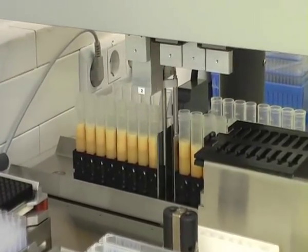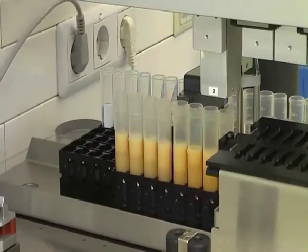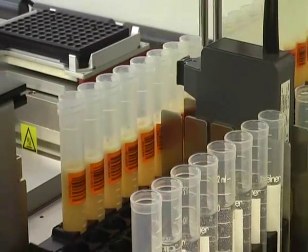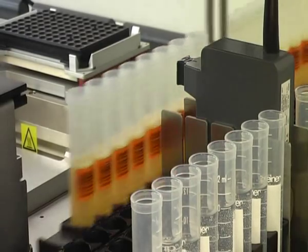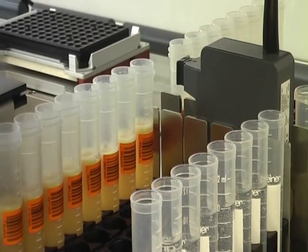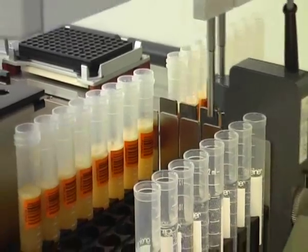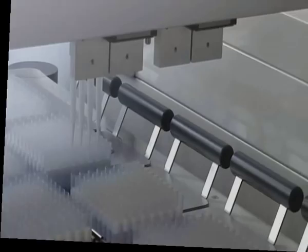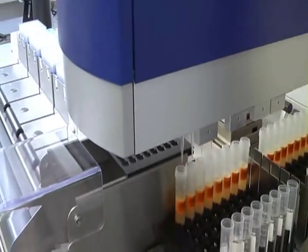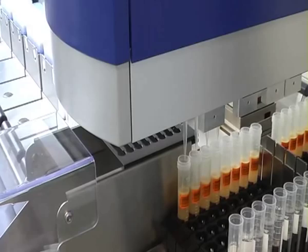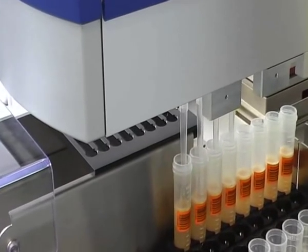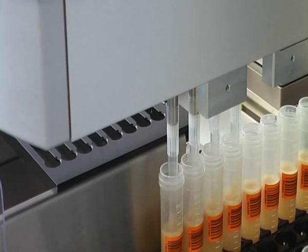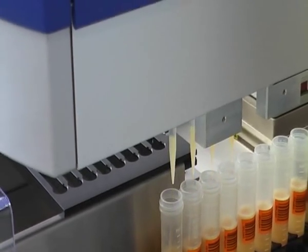In the first step, the barcodes of the sample tubes are read, enabling the software to automatically identify each sample throughout the entire process. After the gripper transfers the process plate to the work position, 200 microliters of enrichment are transferred from the sample tubes into the process plate.